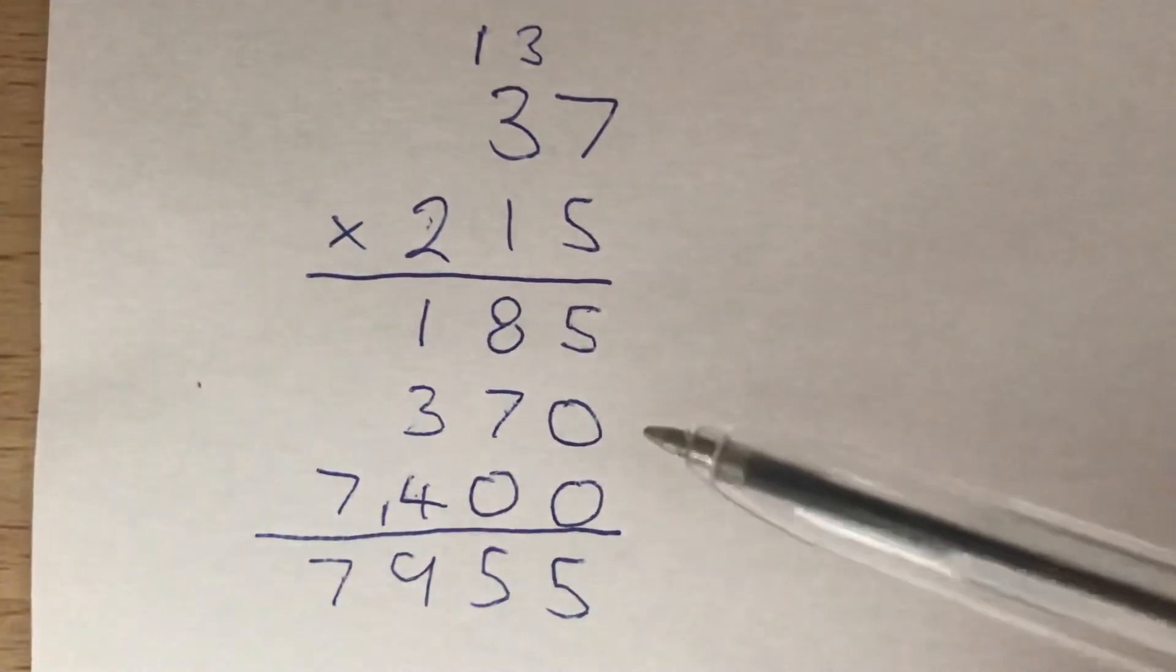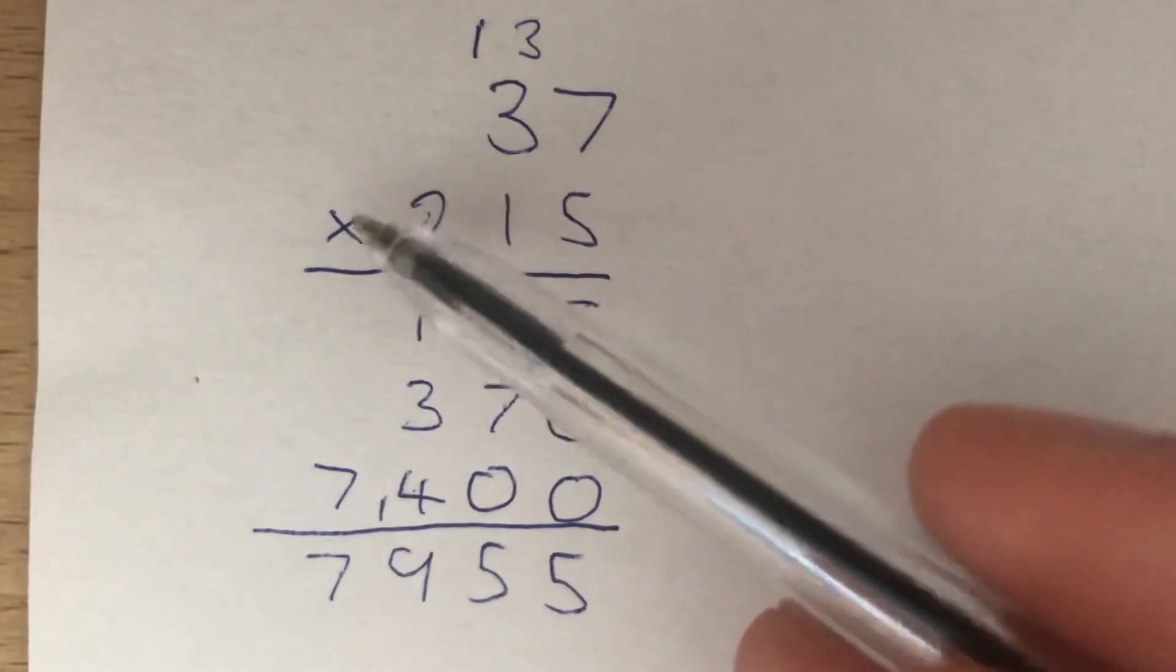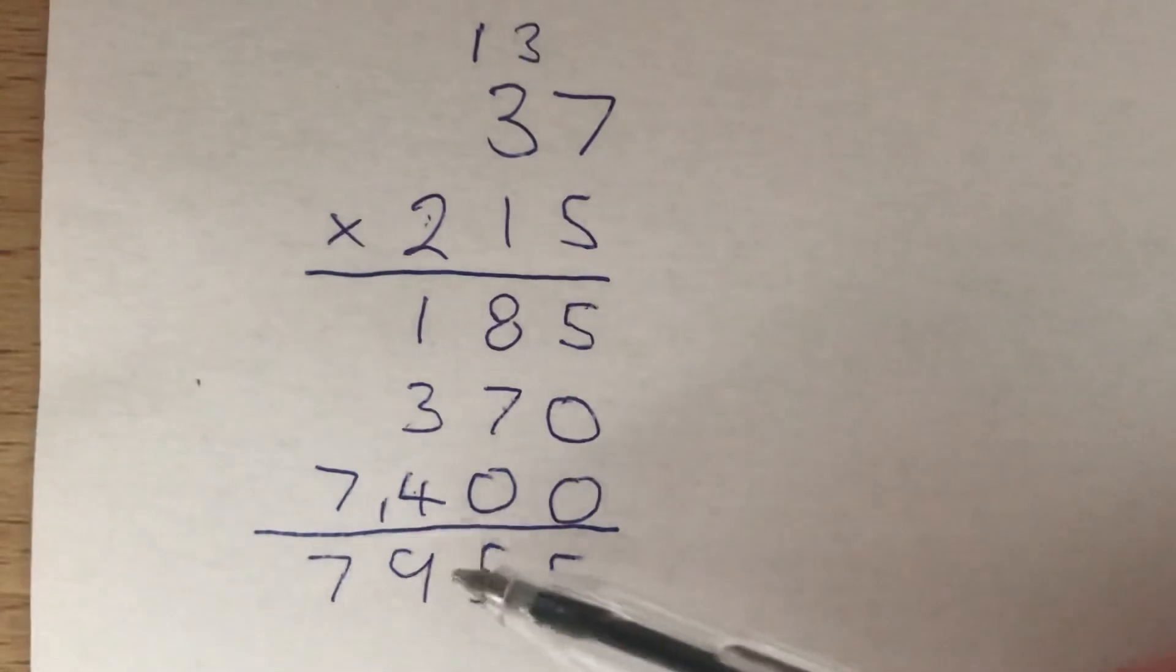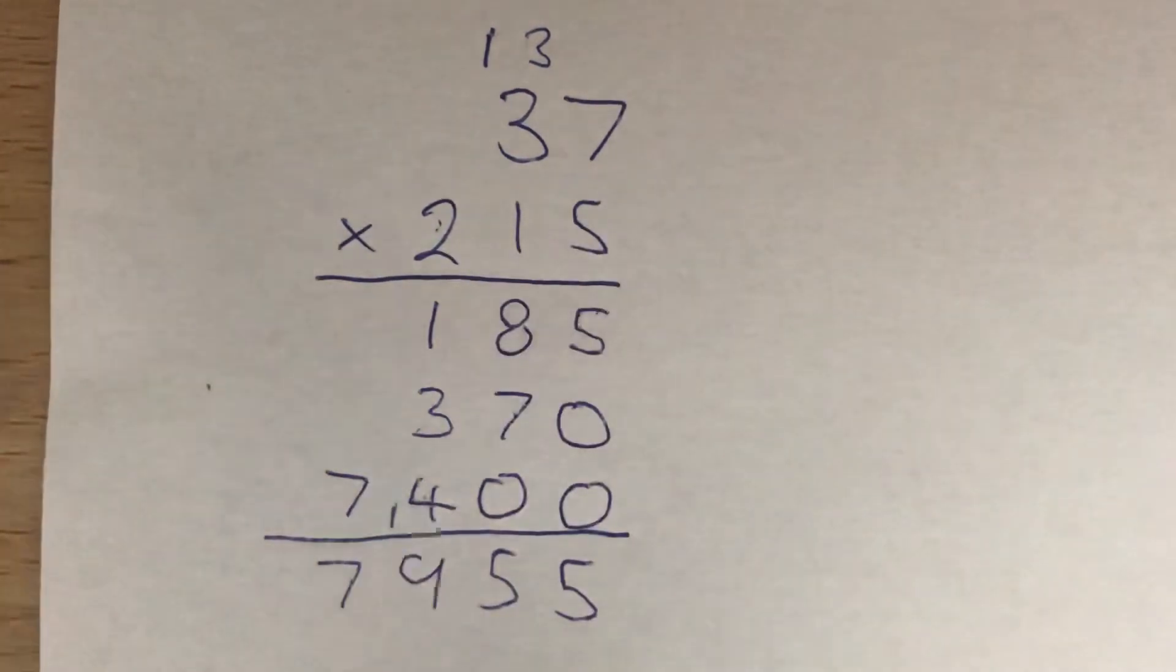So we see in this one that we put 2 placeholder 0s here. If we had a 4-digit number here, the 4th column we multiply by would have 3 placeholder digits, and so on. We could do this for any number of digits - we just get an extra placeholder digit each time.